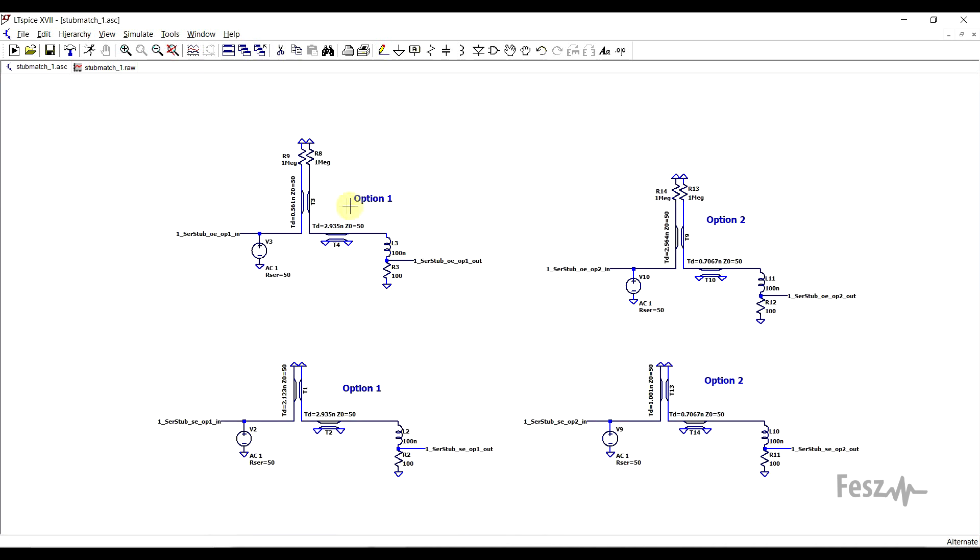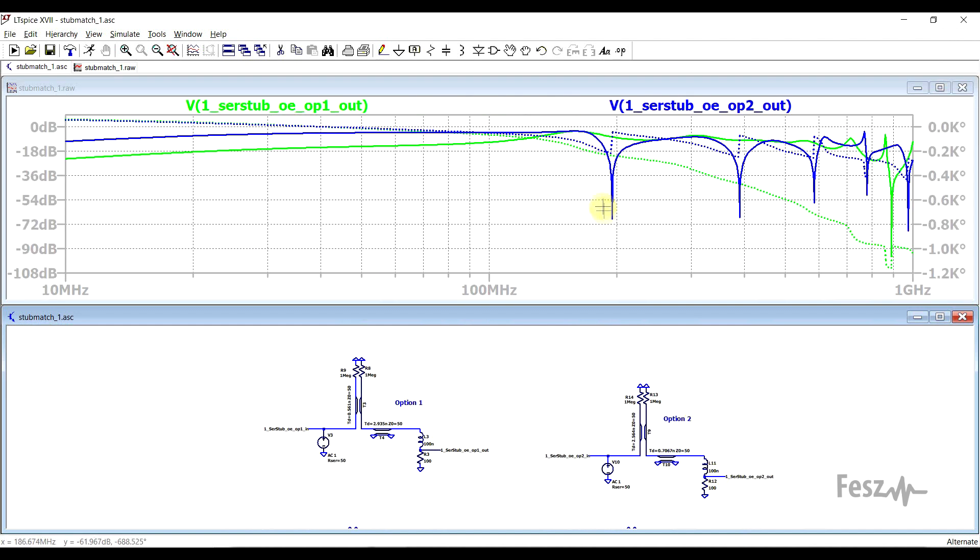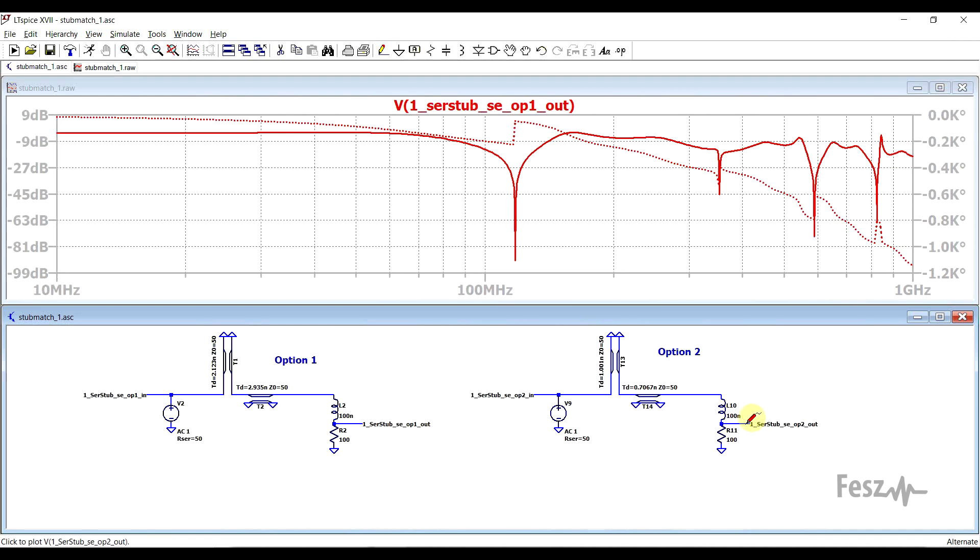Now moving on to the series stub implementations, we have more or less the same story as before with a few observations. To get the simulator to not give any errors, I had to connect the open-ended stubs to ground using some very large value resistors. So this will not be needed in real life of course, but it is needed in the simulator to prevent errors from occurring. If we look at the response of these circuits, so first of all the open-ended stubs, again they are giving a good matching at 160MHz, and the short-circuited stubs are giving the same result. So each of these circuits is providing a matching at 160MHz, but they are giving a slightly different response shape.